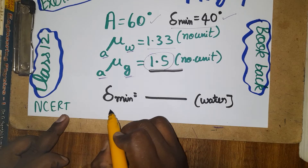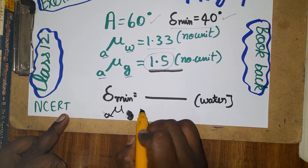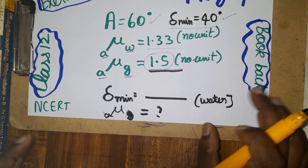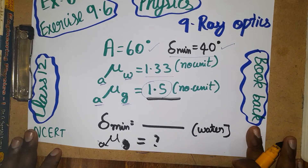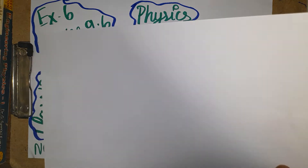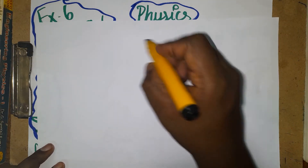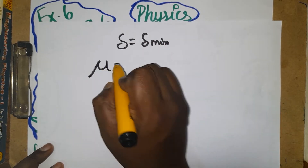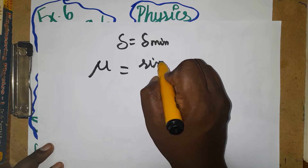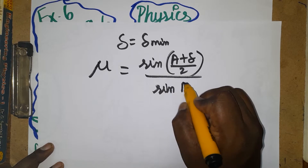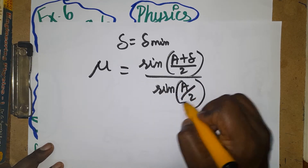There are two questions asked. First: what is the refractive index of air to glass? Second: what is the minimum deviation when the prism is placed inside water? The prism formula at minimum deviation is: refractive index = sin((A + δ_min)/2) divided by sin(A/2). This formula is only applicable when deviation is at its minimum.